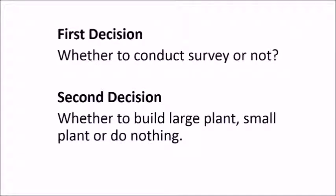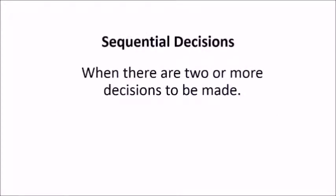The owner now has two decisions to make. The first decision is whether or not to hire the marketing consultant to conduct the survey. The second decision is whether to build a large plant, small plant, or do nothing. This is an example of sequential decisions — when there are two or more decisions to be made.